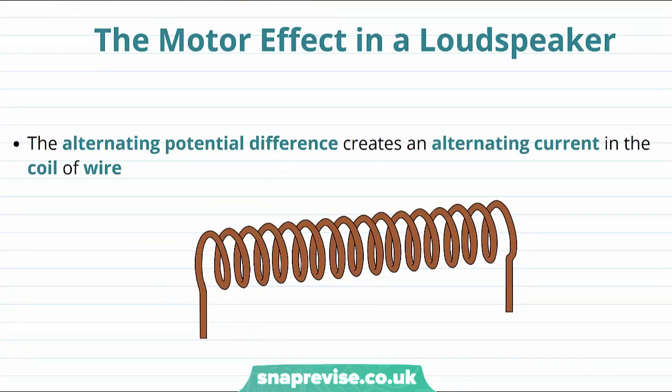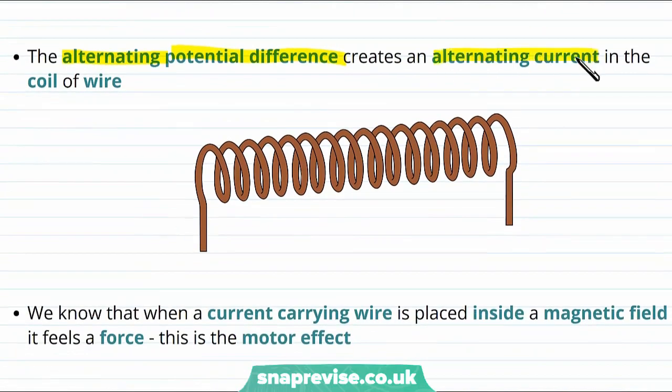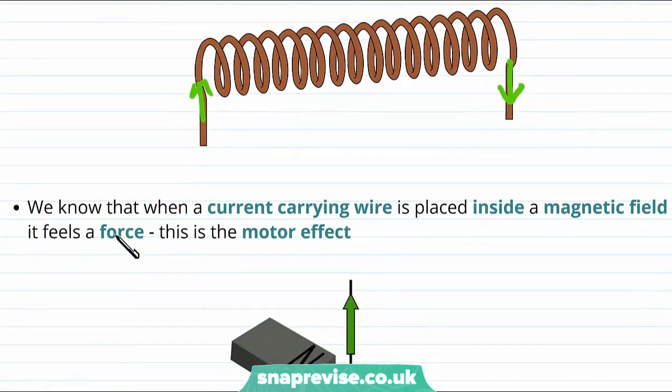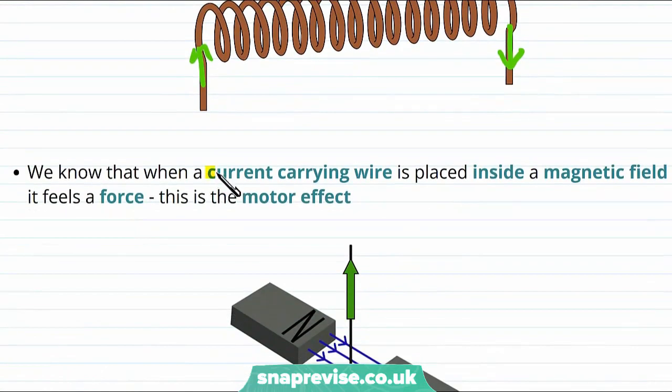Now let's move on to seeing how the motor effect occurs in a loudspeaker. Remember we have this alternating potential difference that's creating an alternating current in the coil of wire. So let's draw the current going one way round, but of course at a later time it will switch. We've said that this coil of wire was wrapped around a magnet.